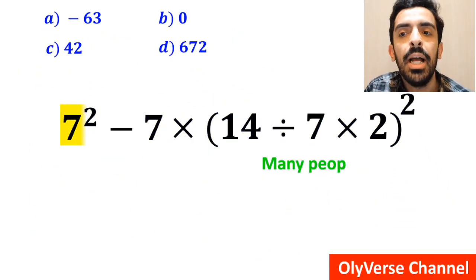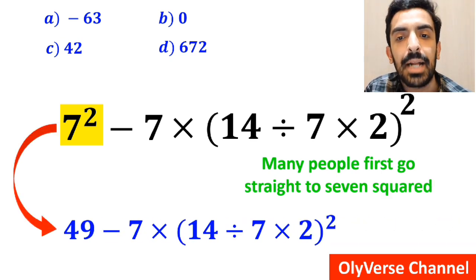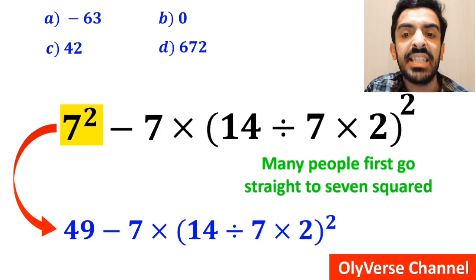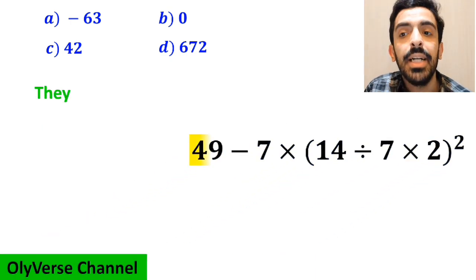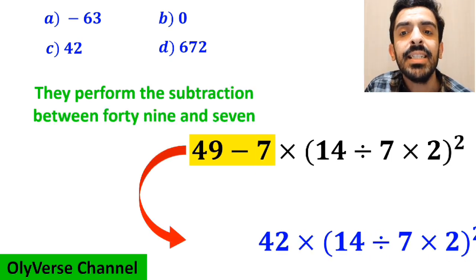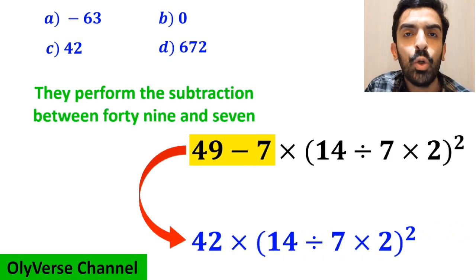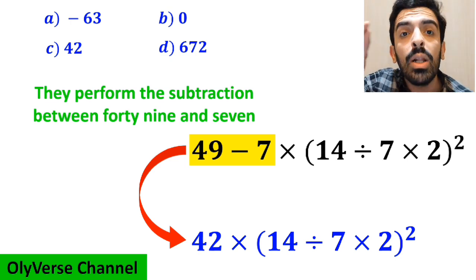To solve this question, many people first go straight to 7 squared and simplify this expression to 49 minus 7 multiplied by 14 divided by 7 times 2 inside the parenthesis all squared. In the next step, they perform the subtraction between 49 and 7, and write this expression as 42 multiplied by 14 divided by 7 times 2 inside the parenthesis all squared.